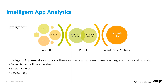Intelligent Application Analytics supports the following use cases with the help of either machine learning or statistical models: server response time anomalies, whose demo we just saw, session build up, and service flaps.